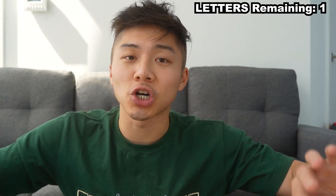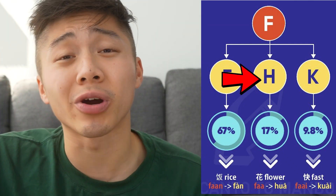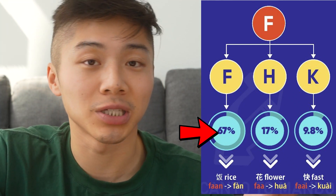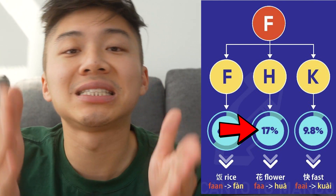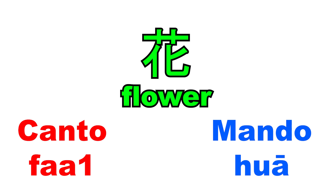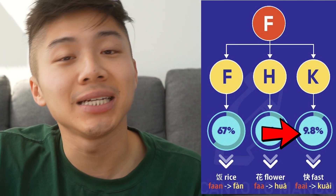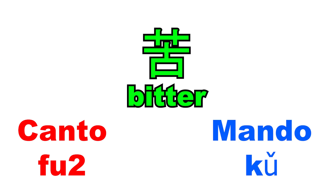Last one now — and guys, you're doing an amazing job. Just comment down below what your favorite Cantonese food is, as this helps me determine what topics to cover in the future. The last one is the Cantonese F, which becomes F, H, or K. About 67% of the time, F stays F — so 'faan' for rice becomes 'fan' in Mandarin. About 17% of the time that F becomes H — so 'faa' for flower becomes 'hua'. And about 10% of the time, Cantonese F becomes K — so 'faa' for fast or 'fu' for pants or bitter becomes 'ku' in Mandarin.